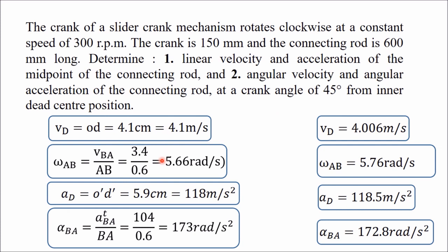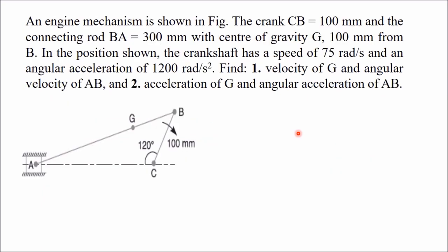These four values — VD, ω_AB, AD, α_AB — match those obtained using relative velocity and relative acceleration diagrams in a previous video, confirming Klein's construction. A second example is now taken to show how to handle the case where an angular acceleration of 1200 rad/s² is also given.